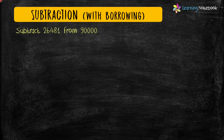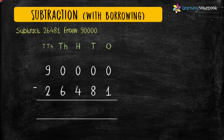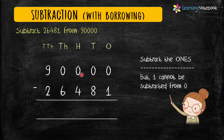Now let's do one more question: subtract 26,481 from 90,000. First, write these five-digit numbers in columns. Now let's start subtracting from the one's place. But 1 cannot be subtracted from 0, so let's borrow from the tens place. But the tens place is also 0, so it cannot help. Let's try the hundreds place, but that is also 0. The thousands place digit is also 0.